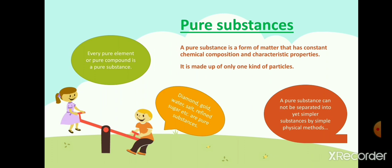Some examples of pure substances are diamond, gold, water, salt, and refined sugar. But seawater is not a pure substance because it has many dissolved substances in it. Similarly, petrol is also not a pure substance because it is a mixture of many hydrocarbons.